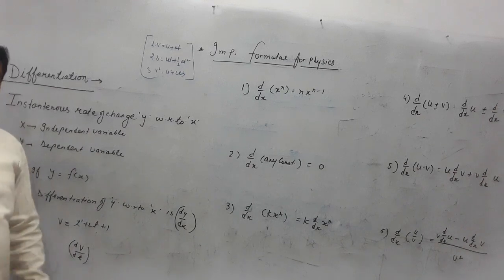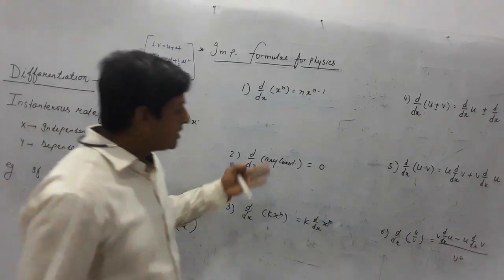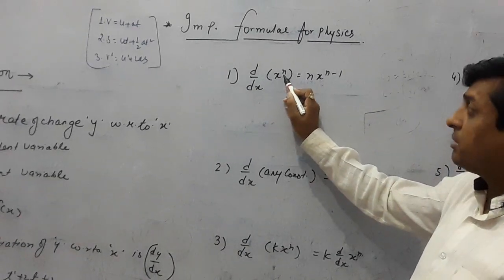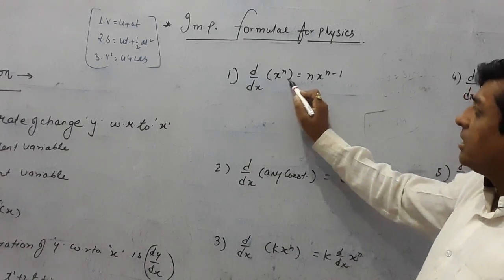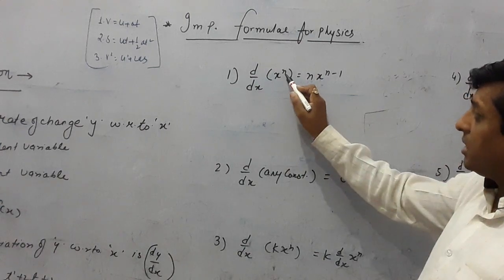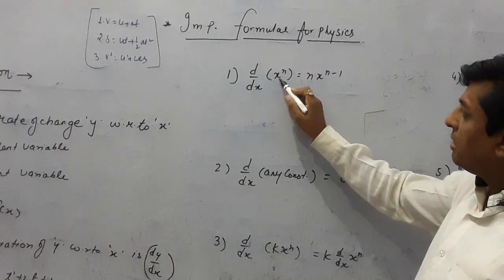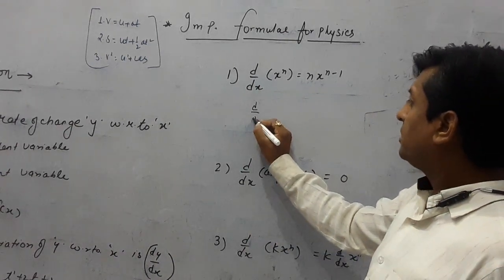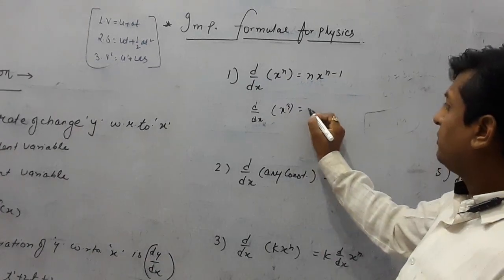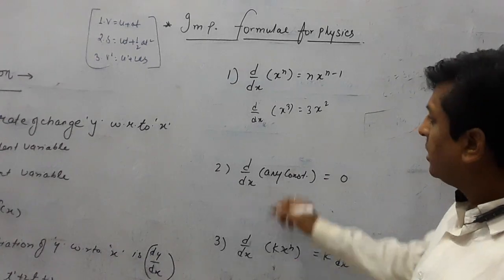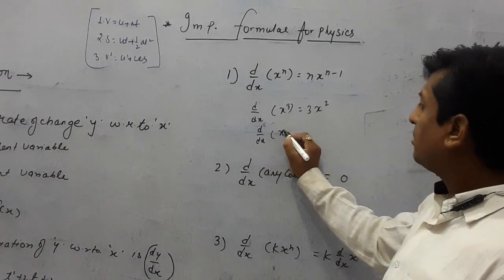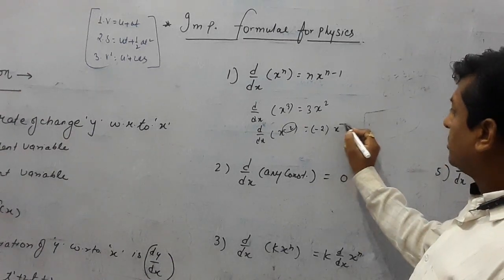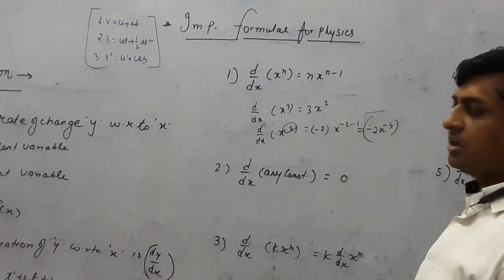To apply differentiation in physics, you need some important formulas. First: d/dx of x^n equals n·x^(n−1). Put the power in front and reduce the power by one. For example, d/dx of x³ = 3x². If it is d/dx of x^(−2), the answer is −2x^(−3). Second: the differentiation of any constant is always zero — for example, d/dx of 5 = 0. Third: d/dx of k·x^n — the constant k comes out in front, and you differentiate x^n as before.